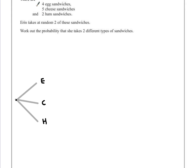For egg, the chance of choosing egg as the first sandwich would be four out of the eleven sandwiches that we have. The probability of choosing cheese would therefore be five out of eleven, and ham is two out of eleven.